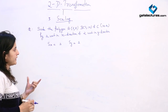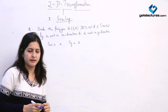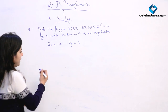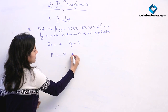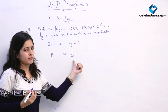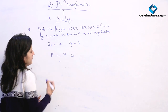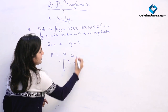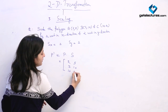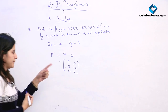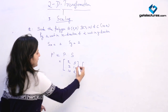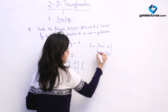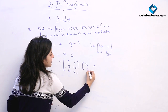Now we have to find the new coordinates of the scaled triangle, or scaled polygon. Directly applying the equation, we know that P dash equals P dot S — the new coordinates are solved by this equation. So we are putting it here: the coordinates we are having are (2,5), (7,10), (10,2), and we multiply by the scaling factor. The scaling matrix S has values sx 0 and 0 sy, which is 2 0 and 0 2.